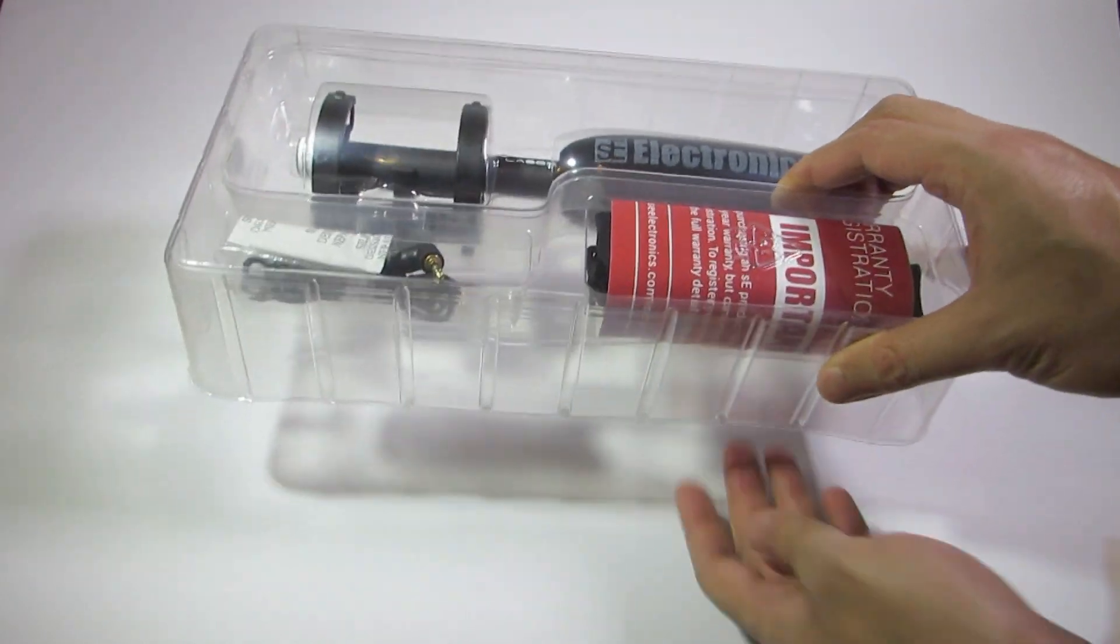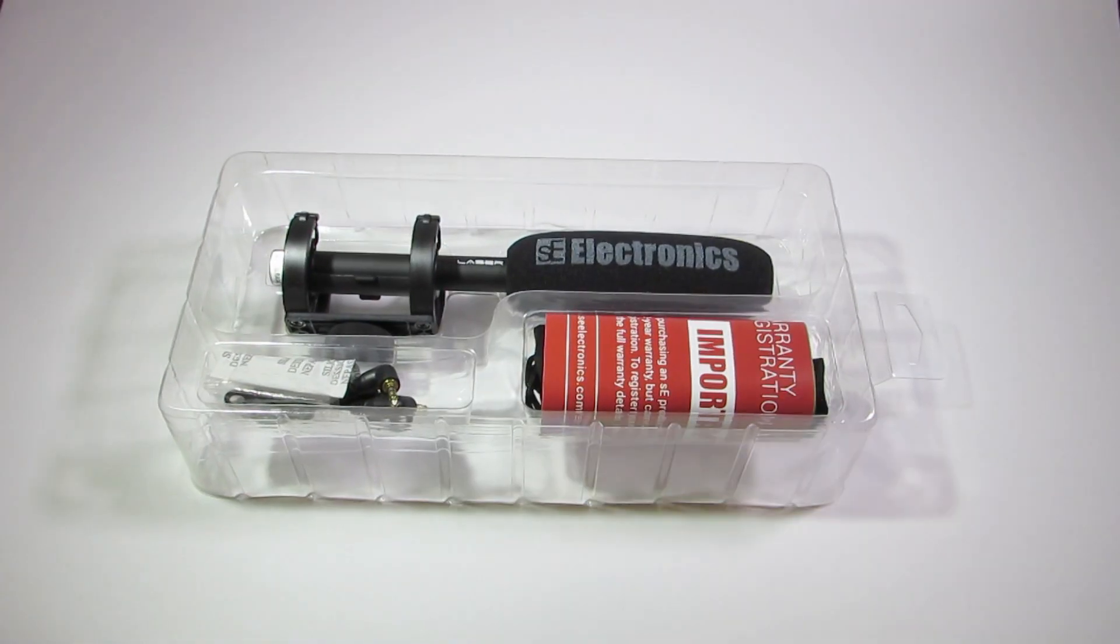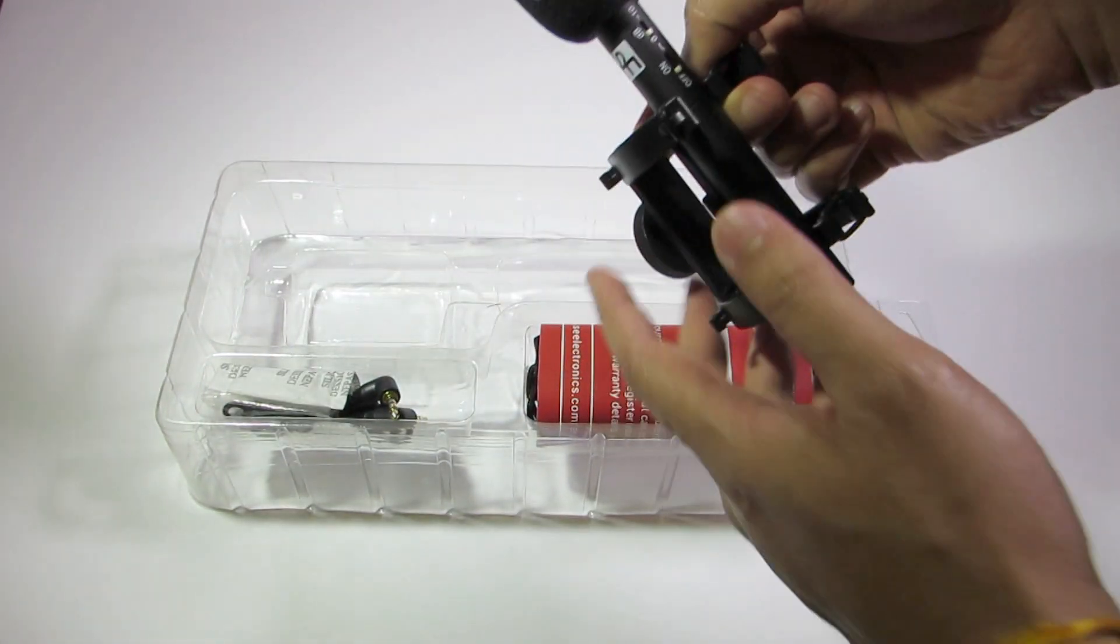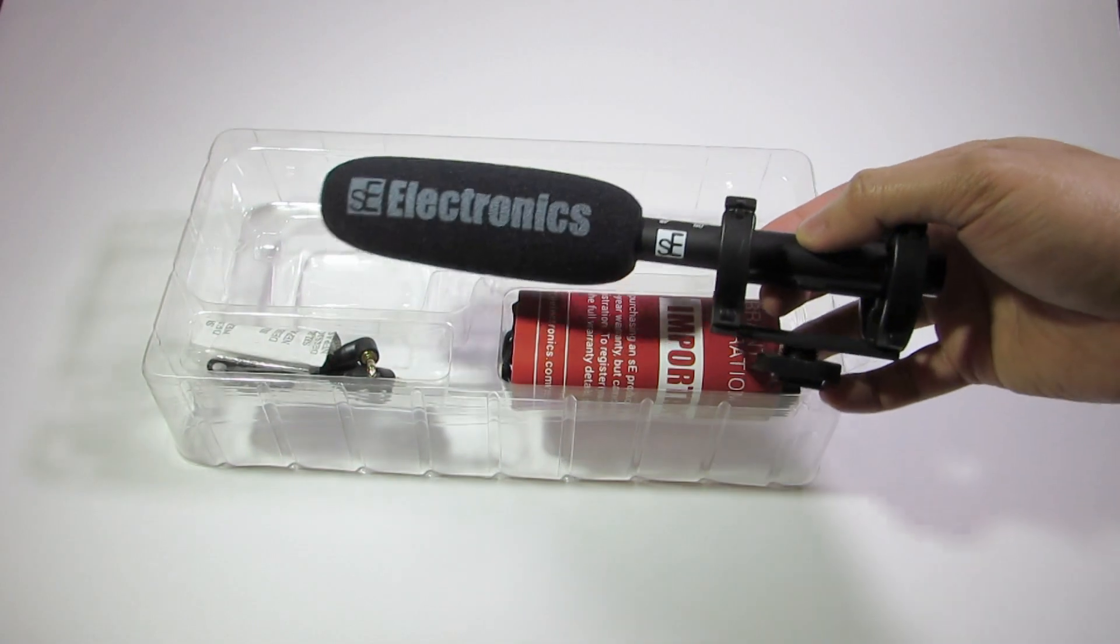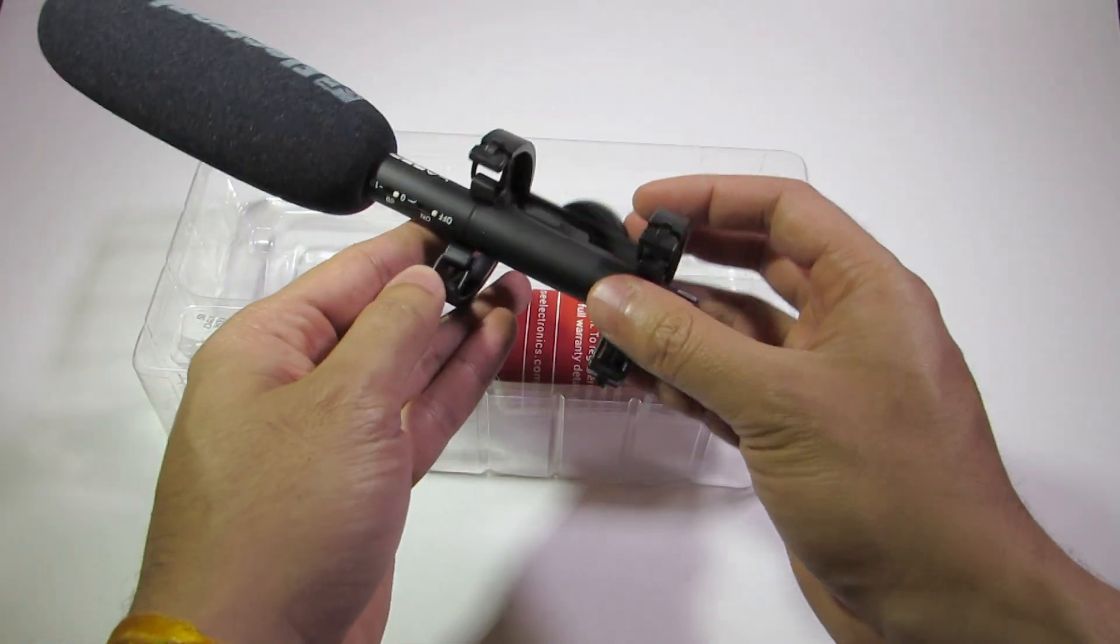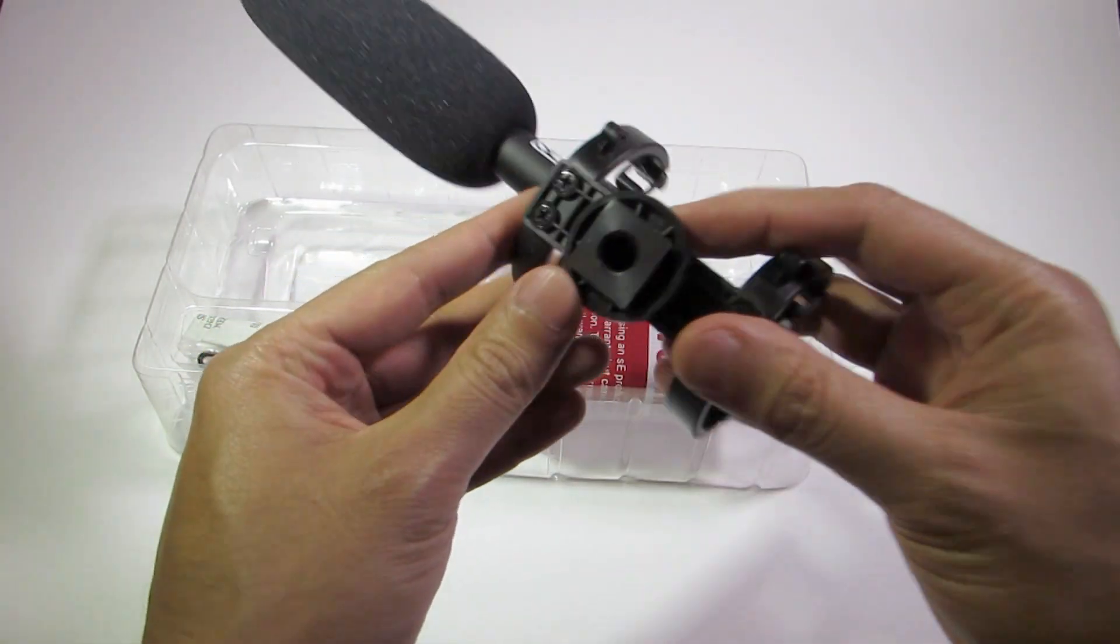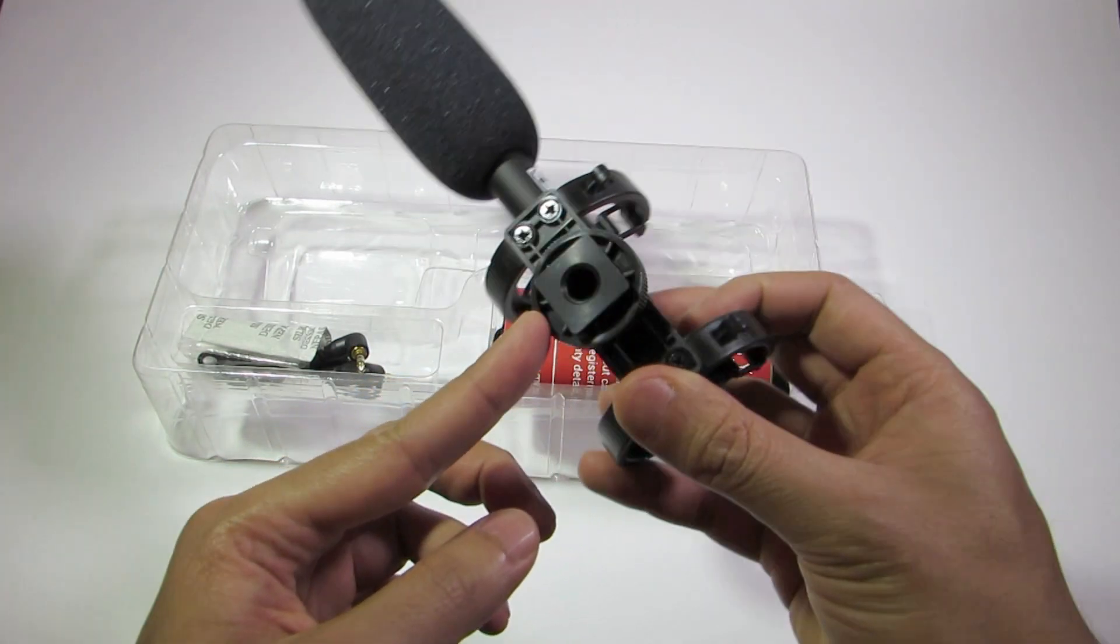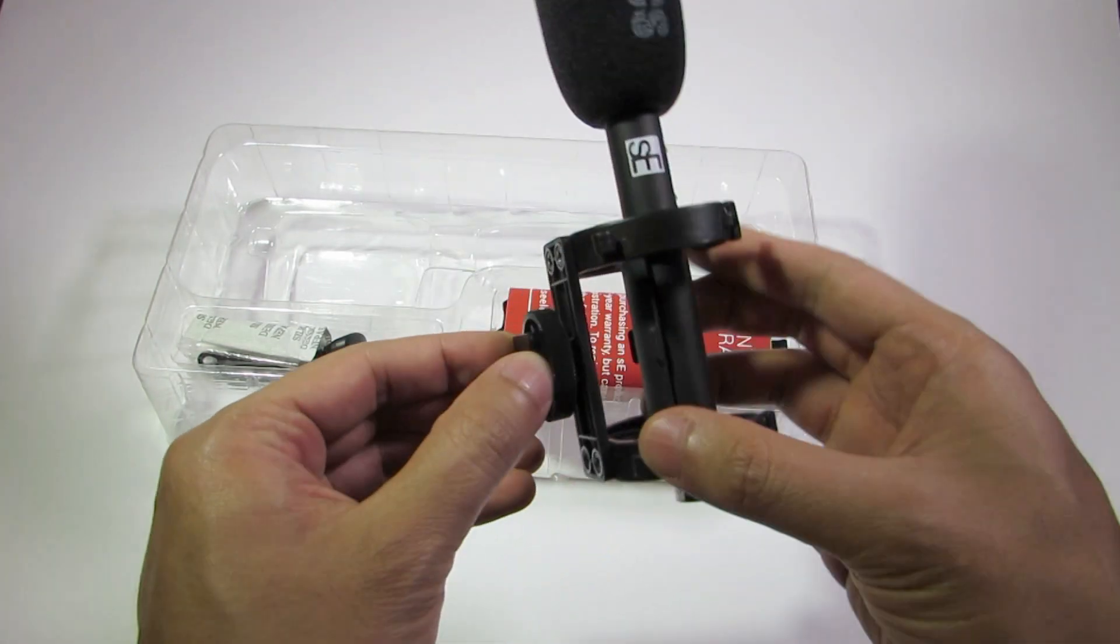It comes in a nice tidy kit. This is the microphone itself, and this little unit here might be the shock mount. It comes with a standard little hot shoe setup which you can mount on most cameras.